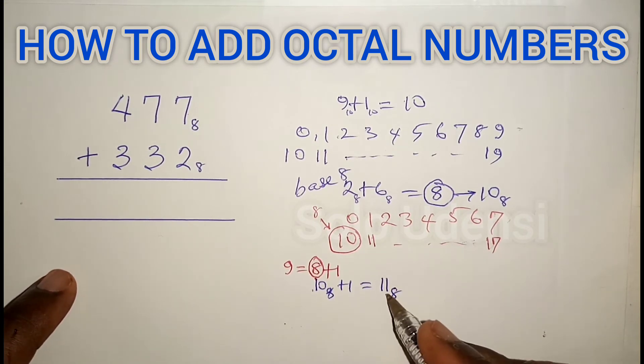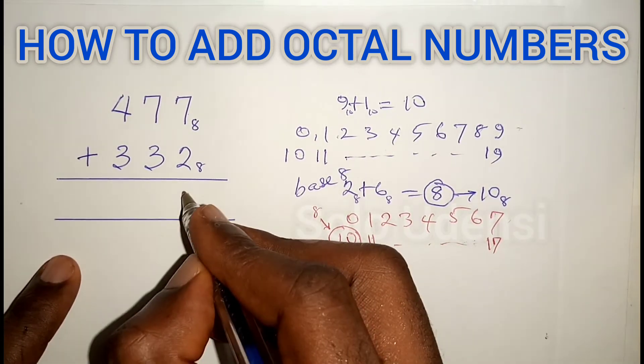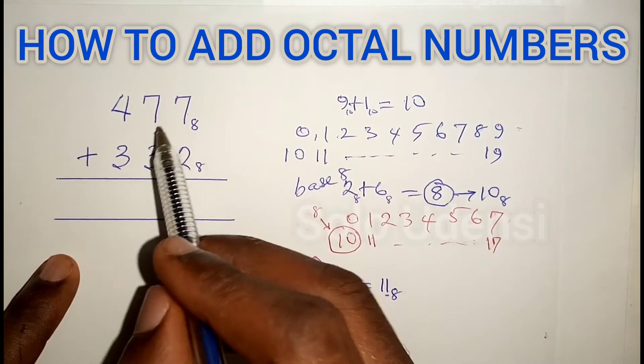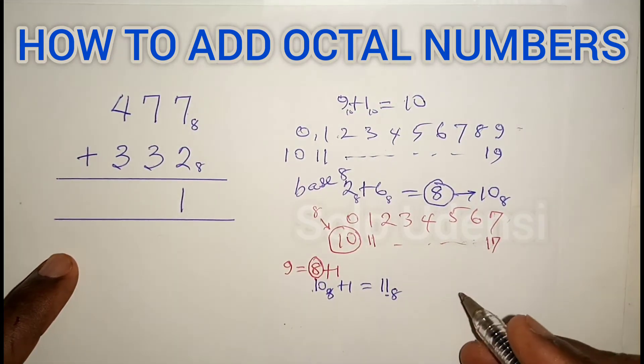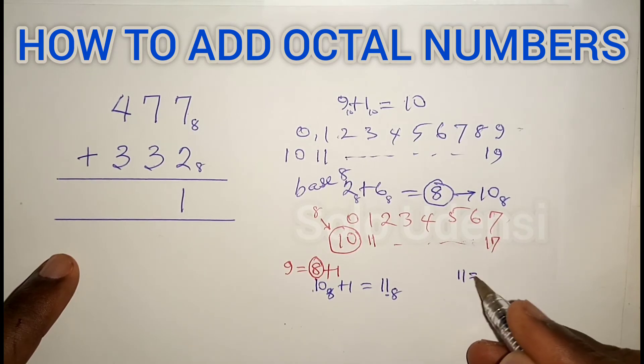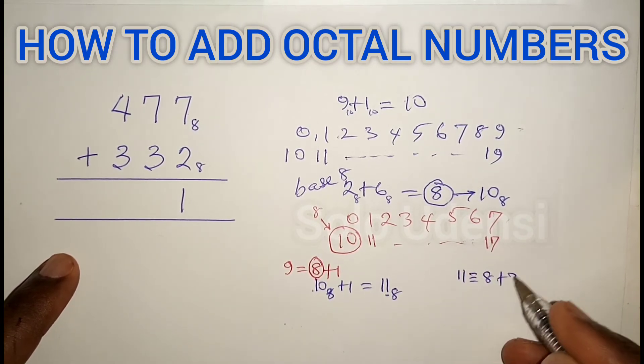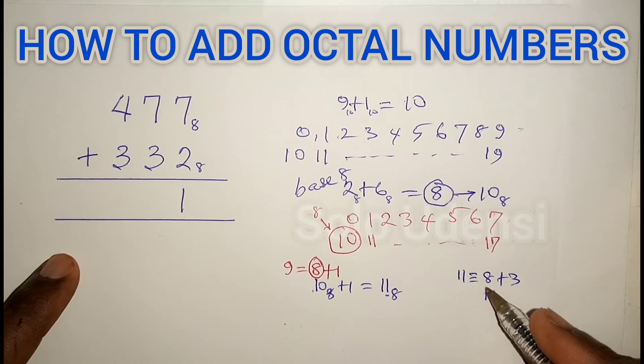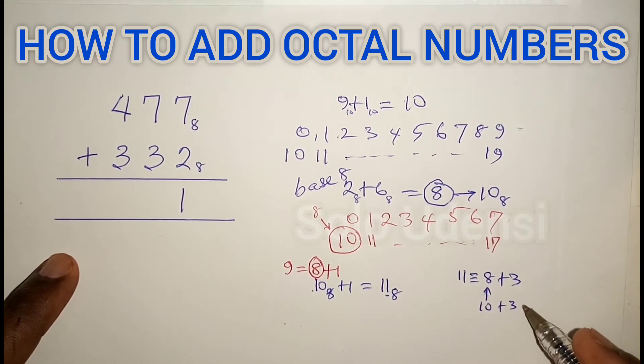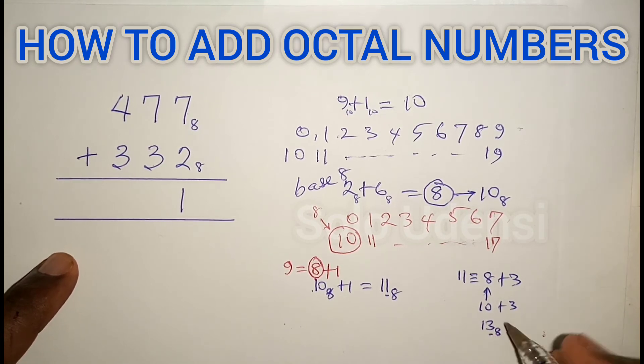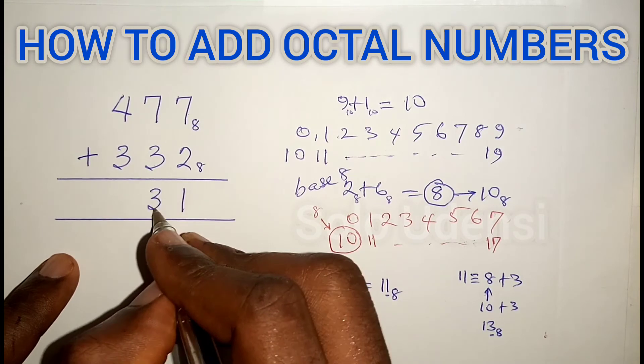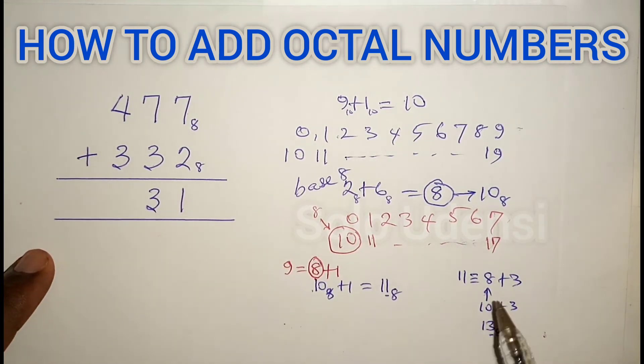So write 1 and carry 1. Now 7 plus 3 plus the carried 1 is 11. Eleven is equivalent to 8 plus 3, which gives 13 in base 8. So write 3 and carry 1.